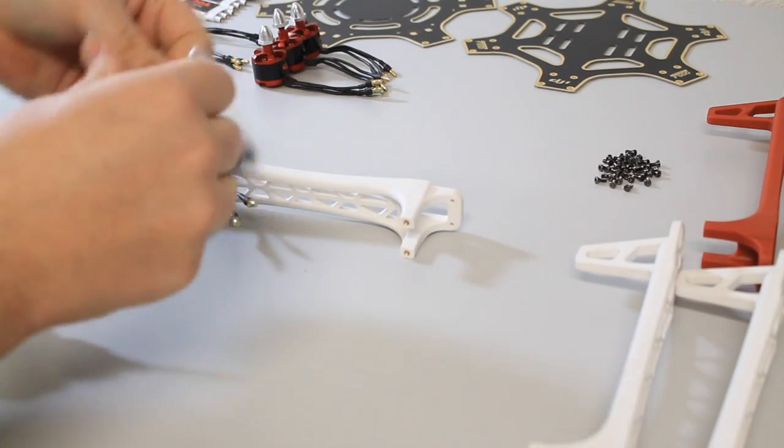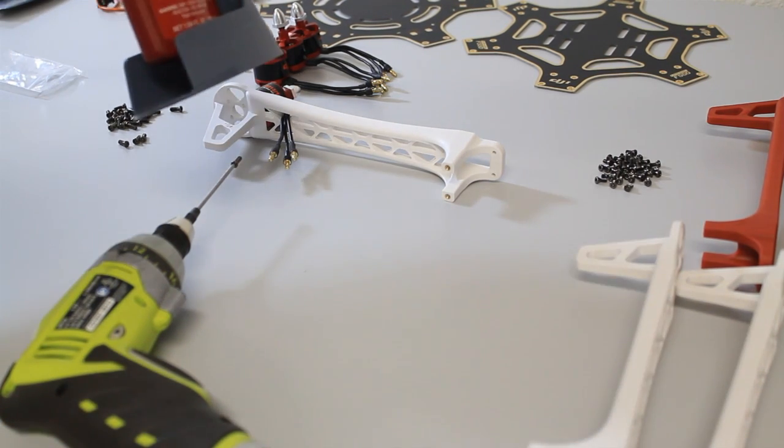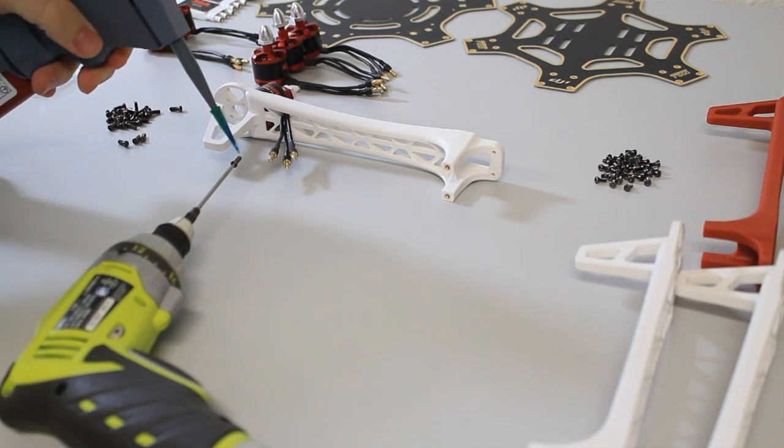And we'll use the M3. And to prevent flyaways, use a little bit of Loctite. You don't want your motors coming off.